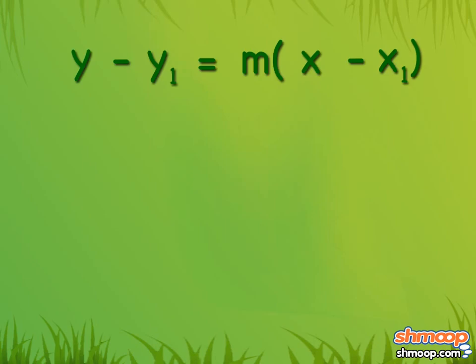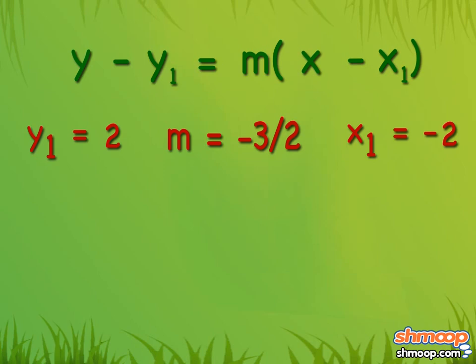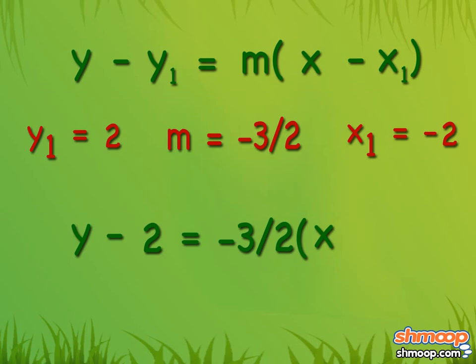Now we plug in the values we know: y1 equals 2, m equals negative 3 over 2, and x1 equals negative 2. Which makes our equation y minus 2 equals negative 3 over 2 times x plus 2.